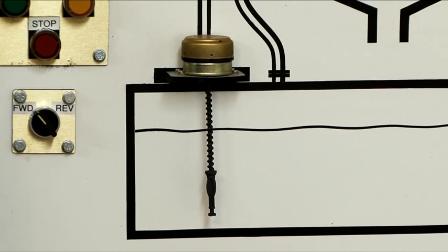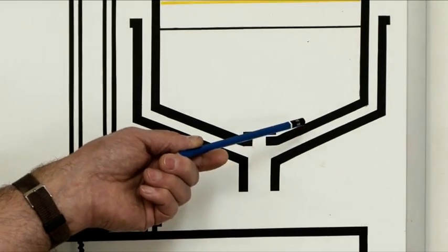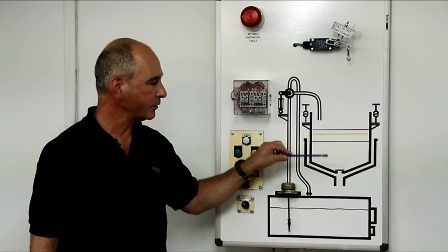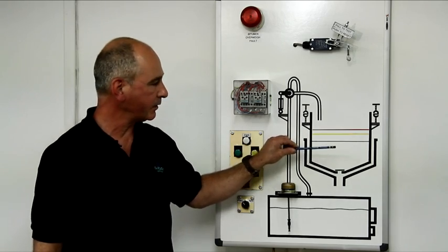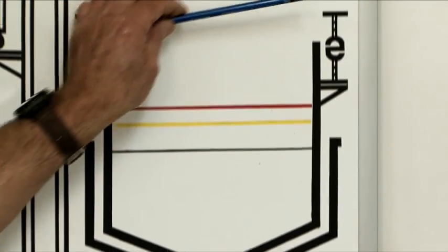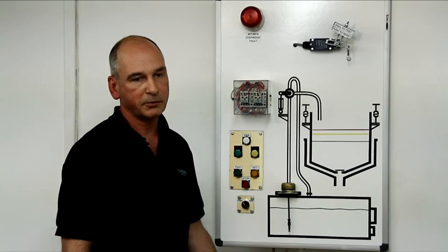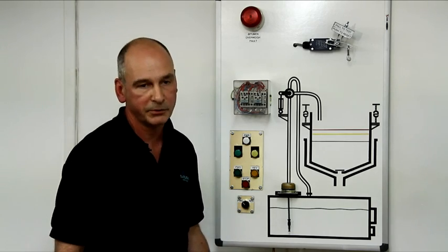In some cases if there is a fault with the load cells or there is debris or contamination between the outer and inner whey kettle, then the control system will be fooled into thinking it's got the wrong amount of bitumen in the whey kettle. The bitumen will continue to rise and overflow into the plant, running down with the potential to cause serious harm or potential fatality.